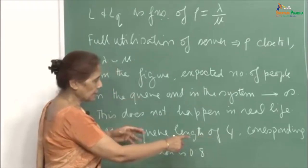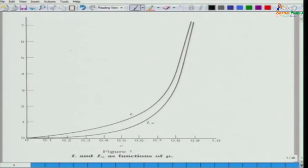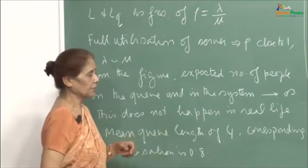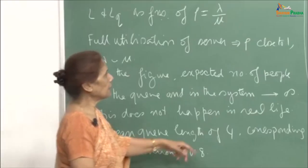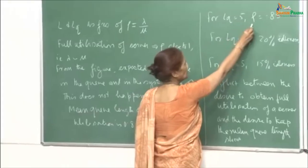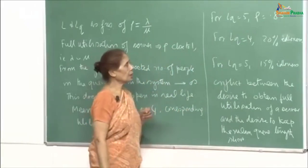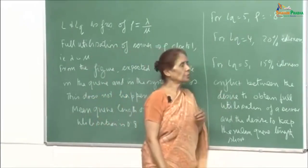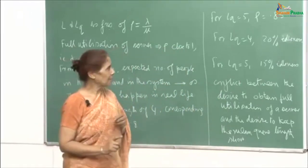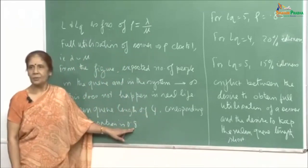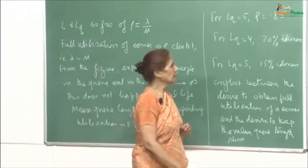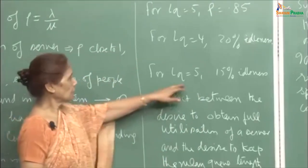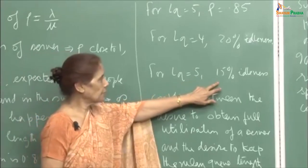If you look at a mean queue length of 4 on the vertical axis and draw a horizontal line, it meets the L-queue curve at a utilization of ρ = 0.8. Similarly, if L-queue equals 5, the corresponding ρ value is 0.85. So when you allow 4 people to wait in the queue, the server will be idle 20% of the time, since ρ = 0.8 means 1 − ρ = 0.2. If you allow a queue size of 5, there is 15% idleness.